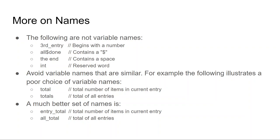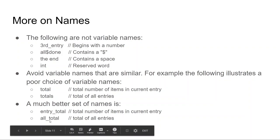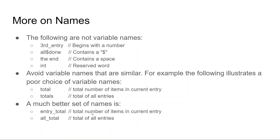Avoid variable names that are similar — for example, total and totals is listed as a poor choice. The instructor disagrees: total and totals makes total sense and is very common. The book suggests better names like entry_total and all_total. That's one man's opinion — a great book, but a book nonetheless.